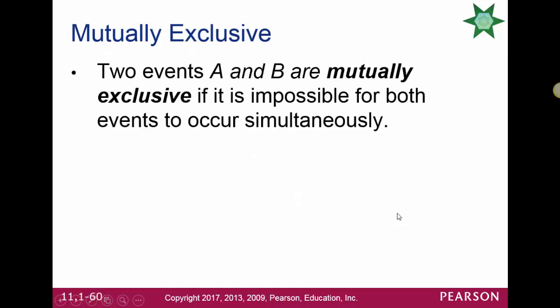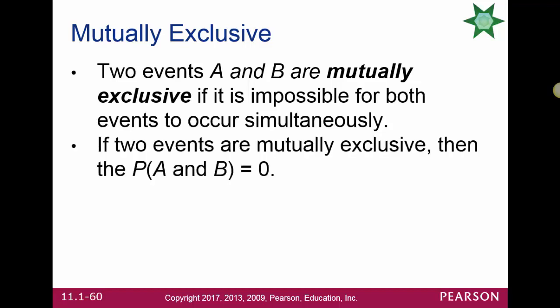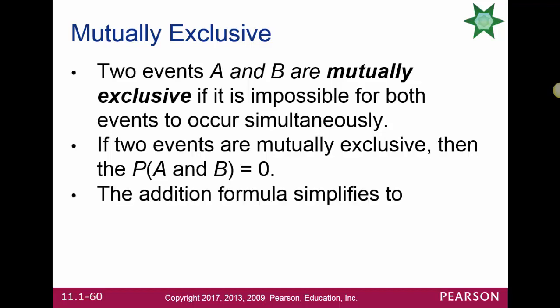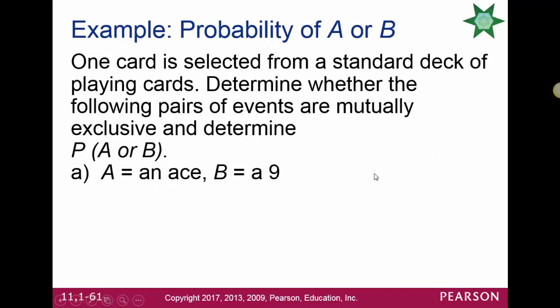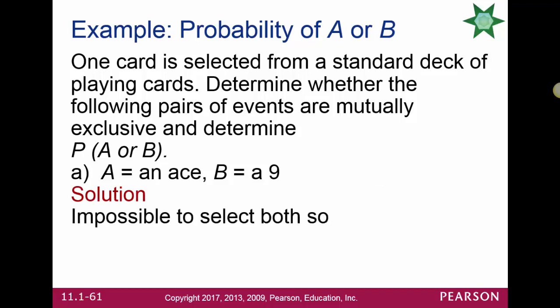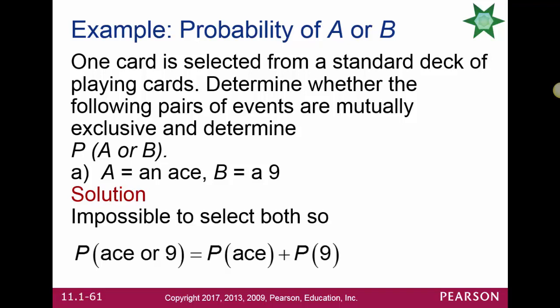Mutually exclusive events cannot occur simultaneously; the probability of A and B is 0. For mutually exclusive events, the formula simplifies to: probability of A or B equals probability of A plus probability of B. One card is selected from a standard deck. Event A: drawing an ace; Event B: drawing a 9. These are mutually exclusive, so we add: 4/52 + 4/52 = 8/52, or 2 out of 13.